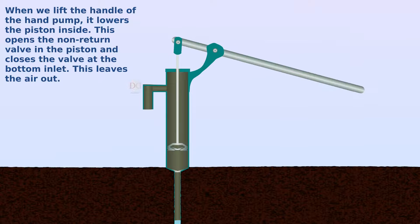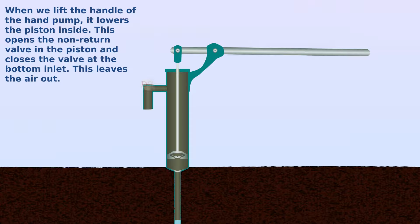This opens the non-return valve in the piston and closes the valve at the bottom inlet. This lets the water out.